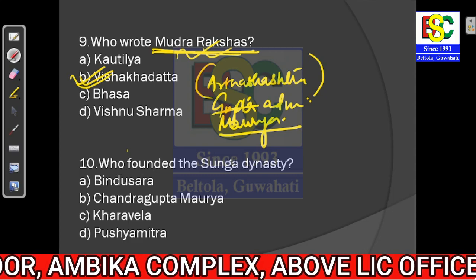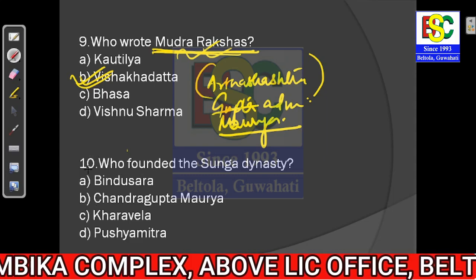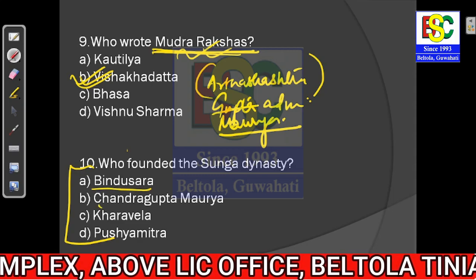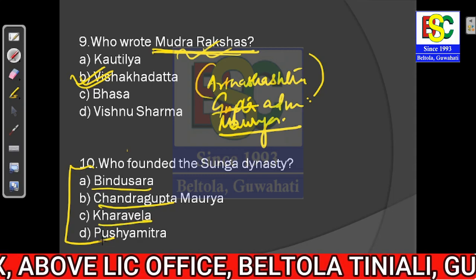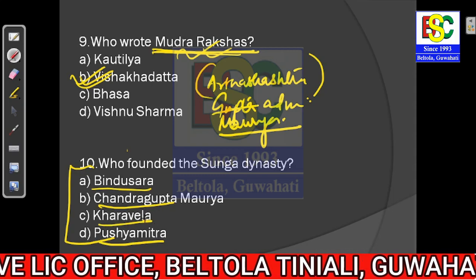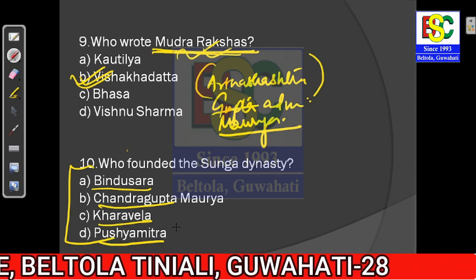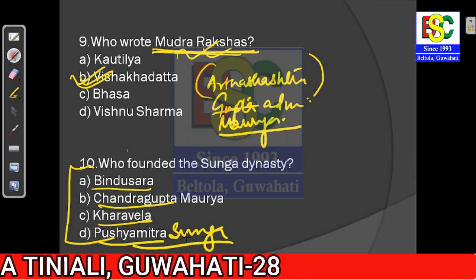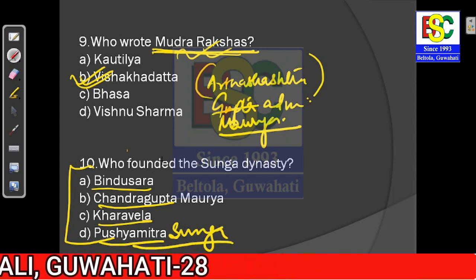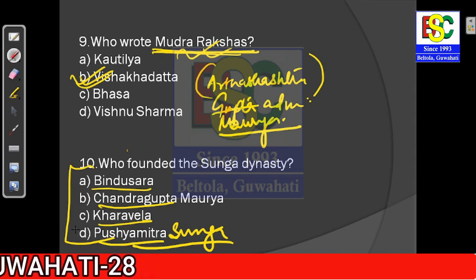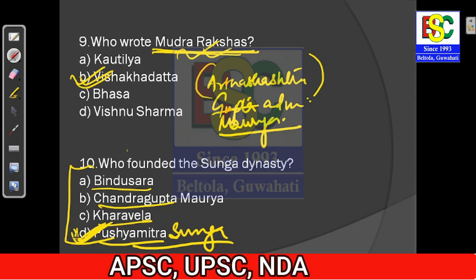Question number ten: Who founded the Sunga dynasty? If you know the name properly, you would be able to answer this. Pushyamitra Sunga was the founder of the Sunga dynasty. The answer is option D. We will finish today's session here. If you have any doubts regarding any question, you can put them in the comment section below. Thank you for watching.